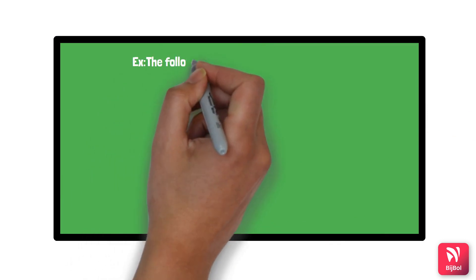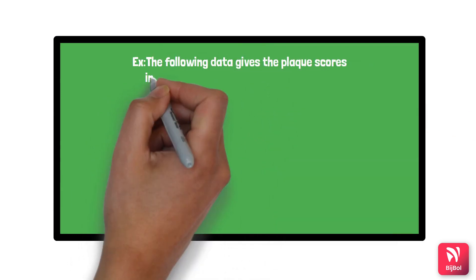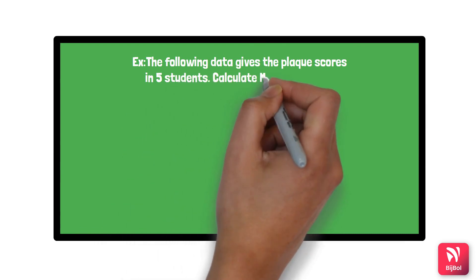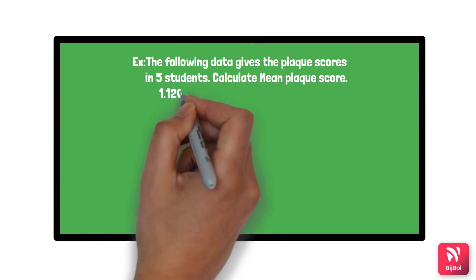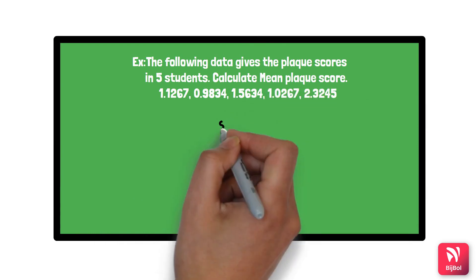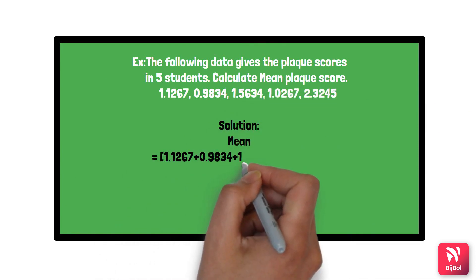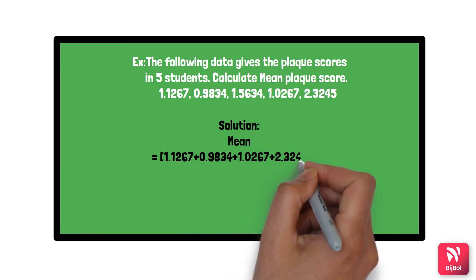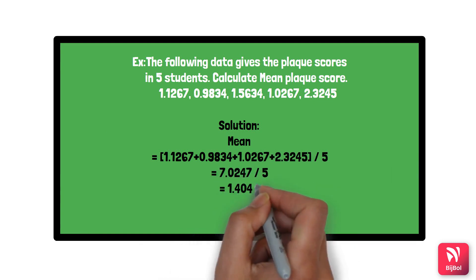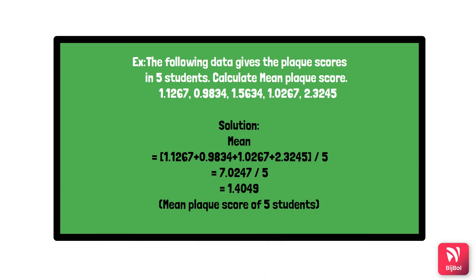As an example, given PLAC scores for 5 students, to calculate the mean you add all the PLAC scores and divide by 5. The result is a mean PLAC score of 1.4049.